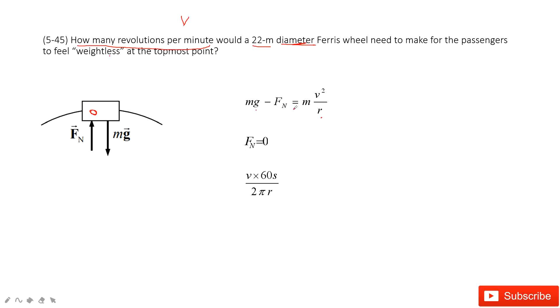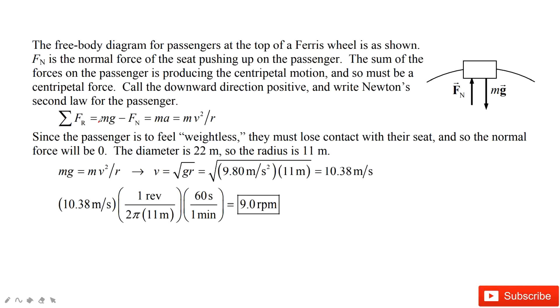So first, we get the velocity as the square root of g times r - 10.38 meters per second. In one minute, the distance traveled is this velocity times 60 seconds. This is the total distance. In one revolution, the distance is 2πr. So we get 9 revolutions per minute. Thank you.